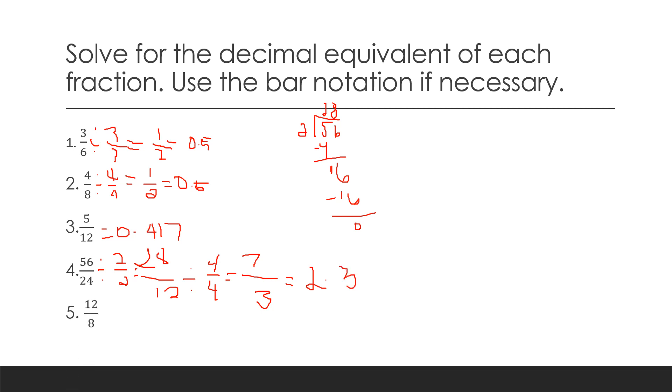For number five, twelve divided by eight equals 1.5. Because if we are going to reduce this to lowest term, the GCF is four. Twelve divided by four is three over two. And we know that three halves or three over two is 1.5. So that's 1.5.